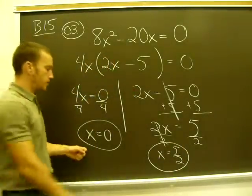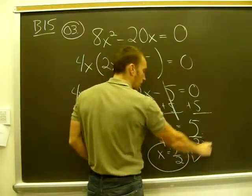And those are my solutions: x equals zero, x equals 5 halves. Remember, you can check those.